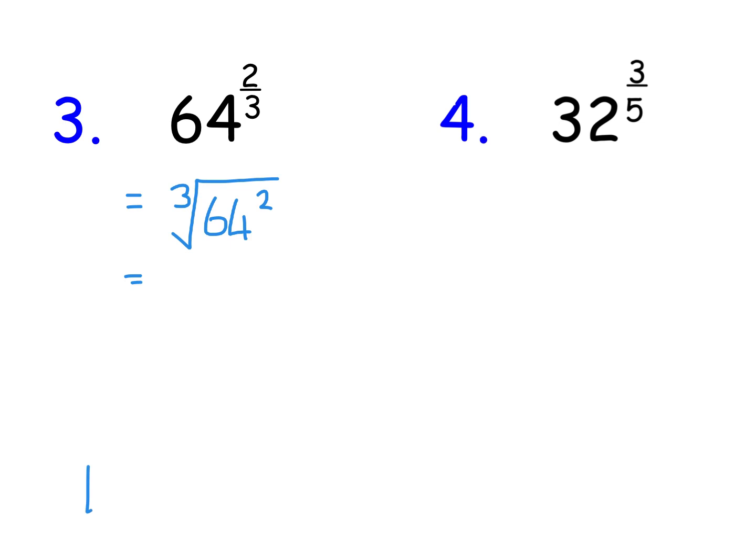Now, the cube root of 64, I know, is 4 times 4 times 4. And if you don't know it, you just work your way up and you go, right, 2 cubed is 8. It's not that. 3 cubed is 27. It's not that. 4 cubed, 4, 60. Oh, it's 64. So the cube root of 64 is 4. So this sum just becomes 4 squared, which we all know is 16. So the final answer is 16.